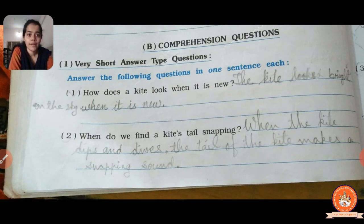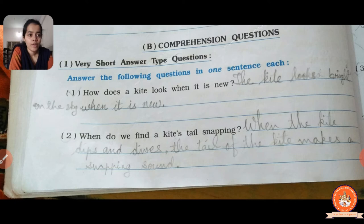Coming to the third section, very short answer type questions. First one: how does the kite look when it's new? As already discussed in the MCQ, the kite looks bright in the sky when it's new. You already know the answer — the kite looks very bright because it is beautiful when it is new.